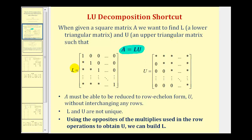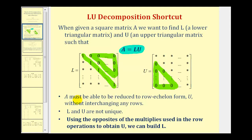For the shortcut method, our lower triangular matrix L will have a main diagonal consisting of ones, and all elements above the main diagonal must be zero. For the upper triangular matrix, all elements below the main diagonal must be zero. Notice the main diagonal of the upper triangular matrix does not have to consist of ones. In order for this decomposition to be possible, matrix A must be reducible to row echelon form — which would be matrix U — without interchanging any rows. Also, matrix L and matrix U are not unique, and because we're using the shortcut method, we're going to use the opposites of the multipliers used in the row operations to obtain U to build matrix L.